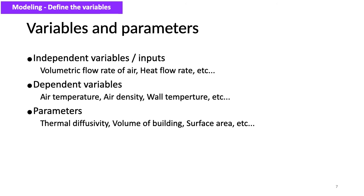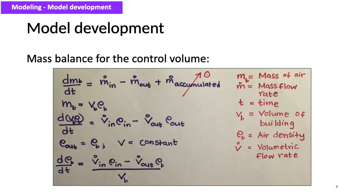A continuous time dynamic heating model is developed based on first principles for the mentioned building unit, considered as a control volume. The model is expressed in terms of state space variables and a lumped parameter approach has been used for estimations. As ventilation plays a leading role in the convective mode of heat transfer in buildings, application of mass balance to the air flow is vital in modeling ventilated spaces.